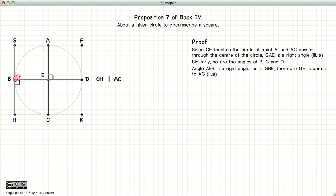Now the angle at the centre of the circle is also a right angle. So we have the angle here at B is a right angle, and the angle here at E is a right angle, which means that GH and AC are parallel.